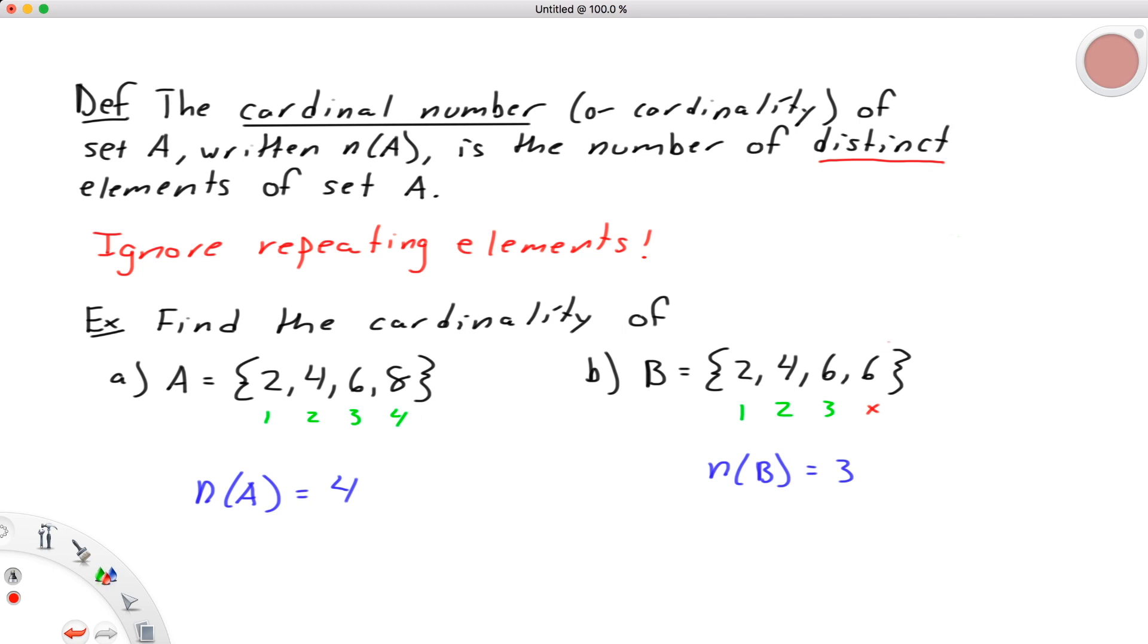In fact, it's generally best practice when working with sets to write B = {2, 4, 6} instead, excluding the repeated 6 altogether.